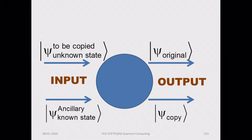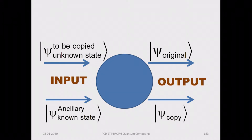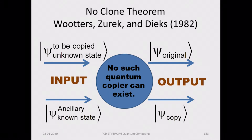A system is described by a state vector in the Hilbert space. There is a physical state which is the state to be copied. It will be copied onto an ancillary known state, and you will get the original state from this quantum copier and a copy of the same made from the ancillary material. It turns out that such a quantum copier does not exist — and not only does it not exist, it cannot exist. This is known as the no-clone theorem of quantum information science.